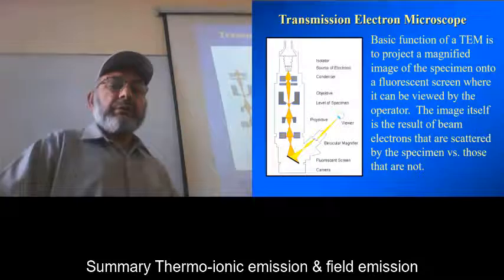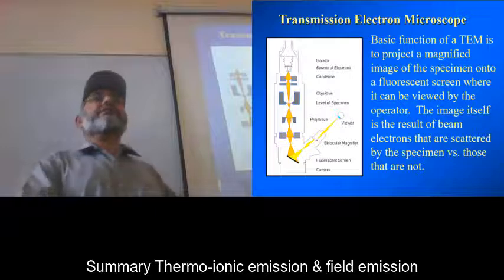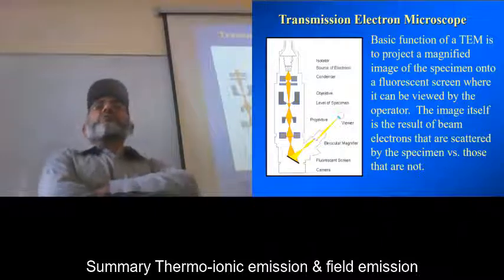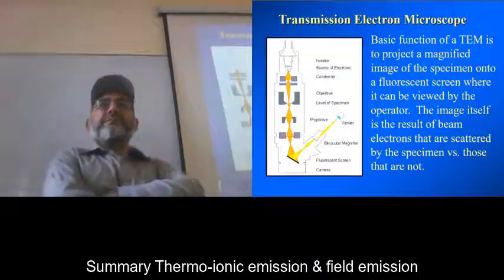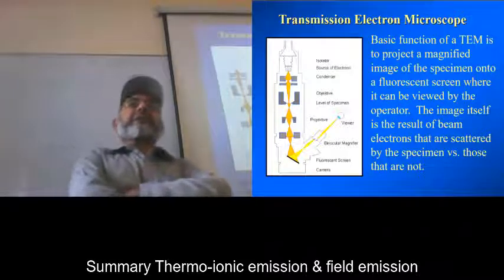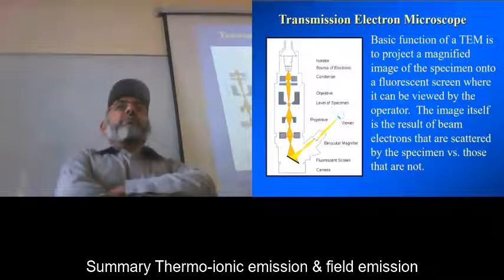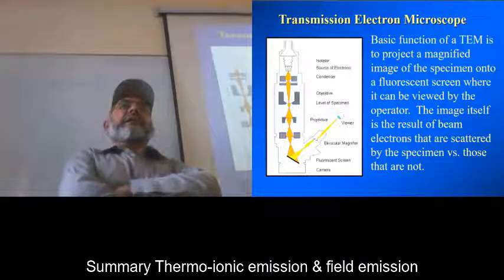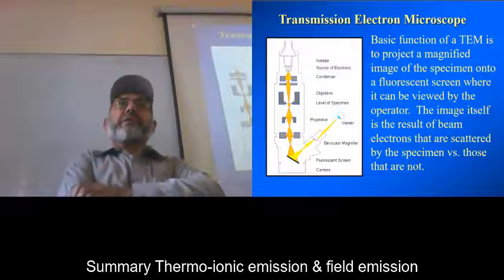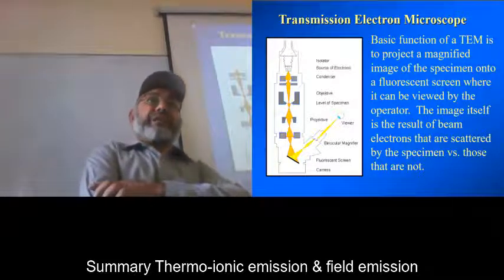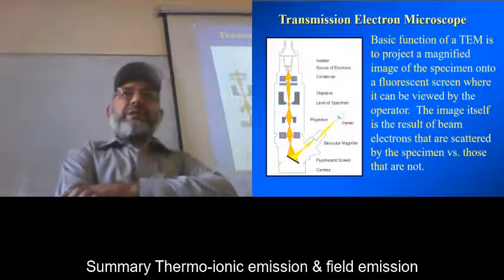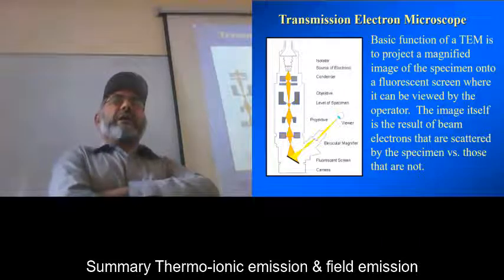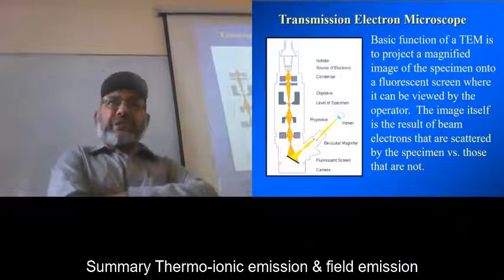So in the last lecture we were discussing the electron gun, and electron gun is the source of electrons. I told you briefly how the electrons are produced, what sort of materials are used to be used as electron gun. Then we discussed the field emission and thermo-ionic emission of electrons which are used in the electron microscope, and up to now and today as well we are talking about transmission electron microscope.